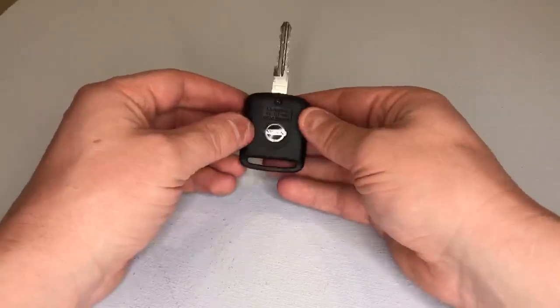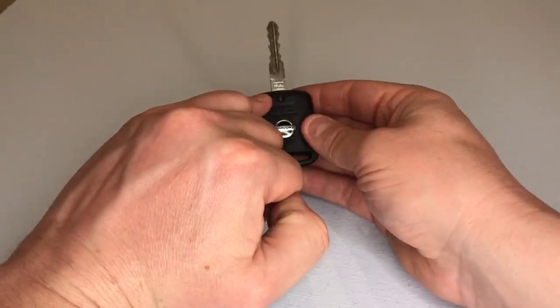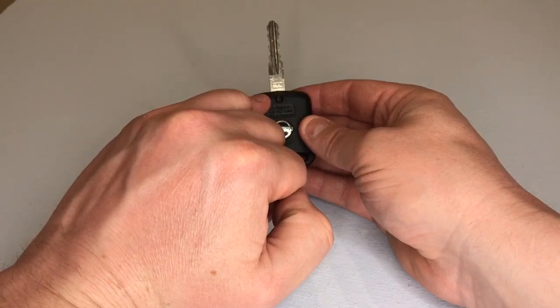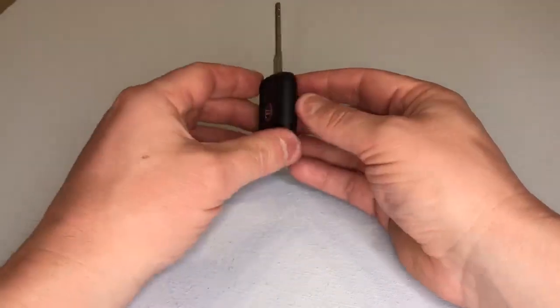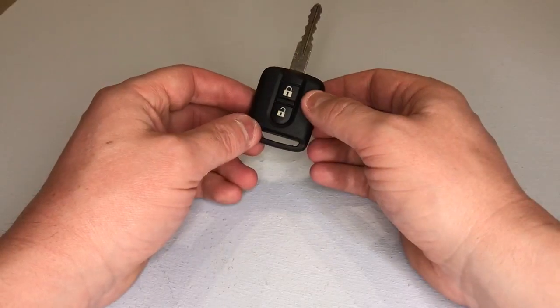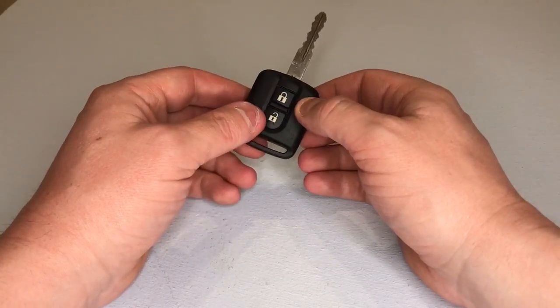What we need to do is remove this small Phillips screw here at the top of the key fob case and then split the two halves of the case open to access the key fob battery.